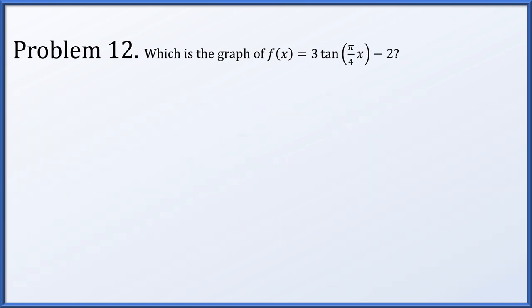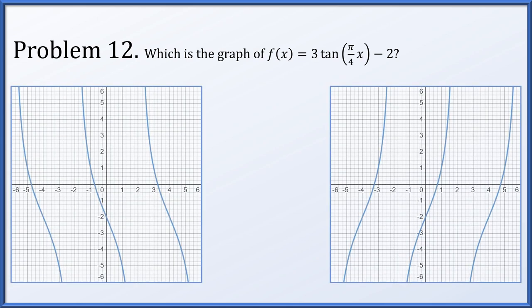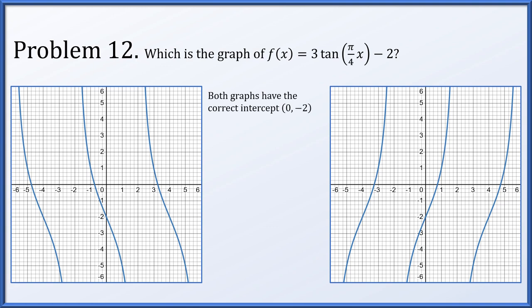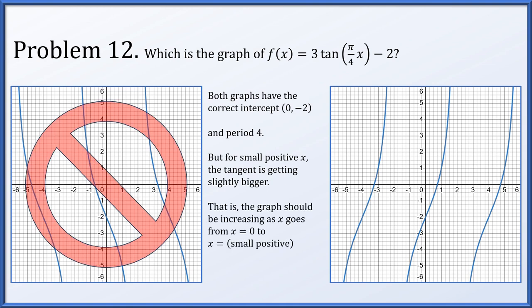Problem 12: which is the graph of f(x) = 3·tan(π/4 · x) - 2? We have two options. Both graphs have the correct intercept of (0, -2) and the correct period of 4. For small positive x's, tangent is positive and increasing from zero. So if x becomes slightly positive, we expect the graph to go up a little bit — which is not the left option — therefore it's the graph on the right.